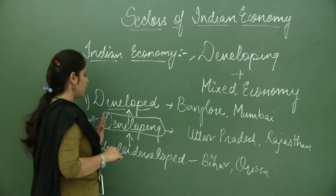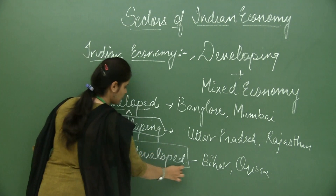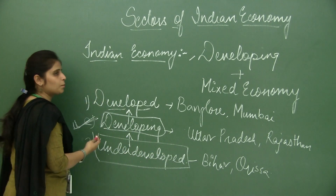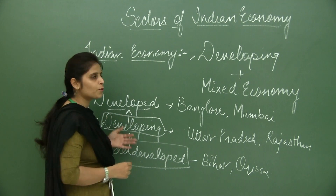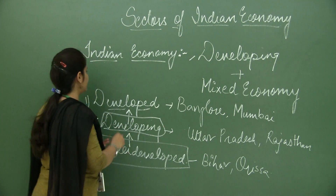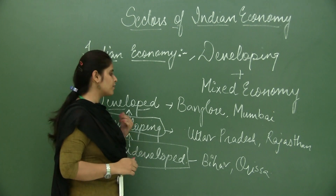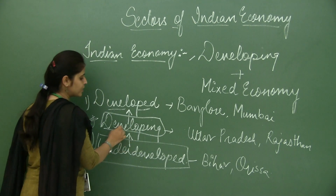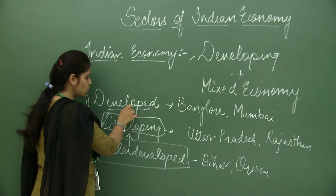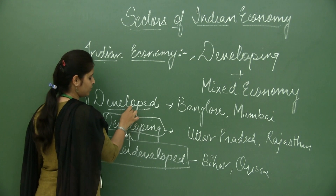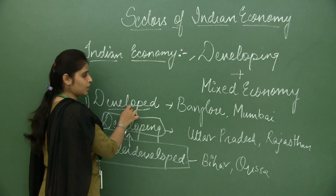Before the 1990s, India was an underdeveloped country. Then it took certain policies and certain decisions, and improved its literacy rate, employment rate, and infant mortality rate, and reached the level of a developing nation. The stage which India will possess in future is that of a developed nation.